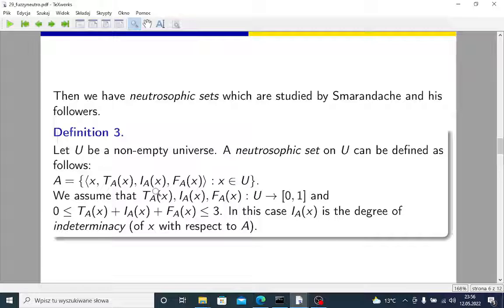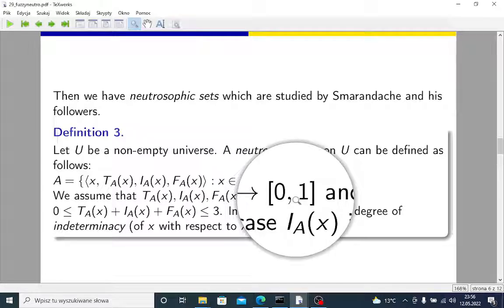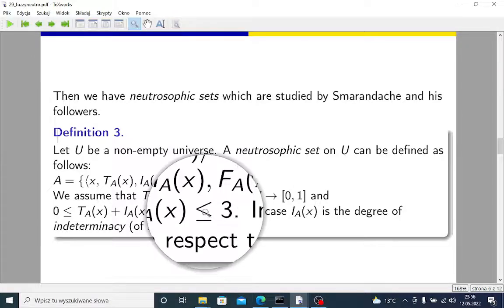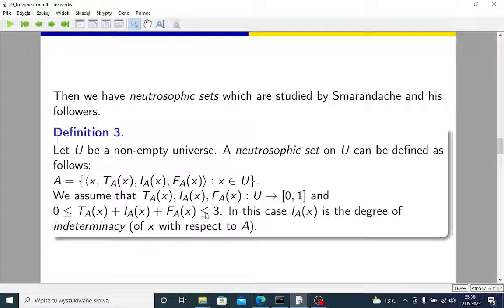Each of them takes values from 0 to 1. But they sum up to the number which may be, which is not bigger than 3, but without any problem, it may be bigger than 1. I stands for indeterminacy. So we have indeterminacy, which is defined by us.